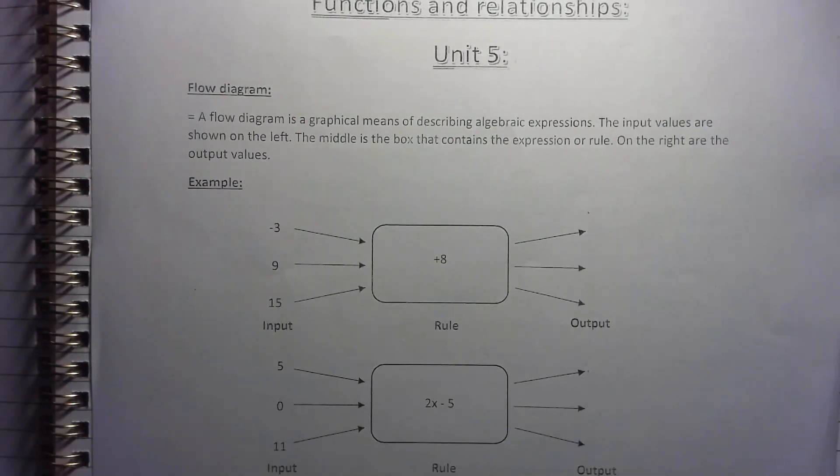This flow diagram is a graphical means of describing algebraic expressions, meaning we are using rules with letters, X's and Y's. So the input values are the numbers that we are putting in on the left, and then you have a rule or something that's happening in the middle, and then what is the answer that we're getting out on the right. So we call them input, output, and then the rule is in the middle.